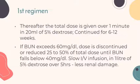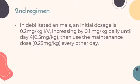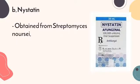This first regimen is continued for 6 to 12 weeks. For the second regimen, in debilitated animals, an initial dosage of 0.2 mg/kg IV is given, increasing by 0.1 mg/kg daily until day 4. Then, use the maintenance dose of 0.25 mg/kg every other day.